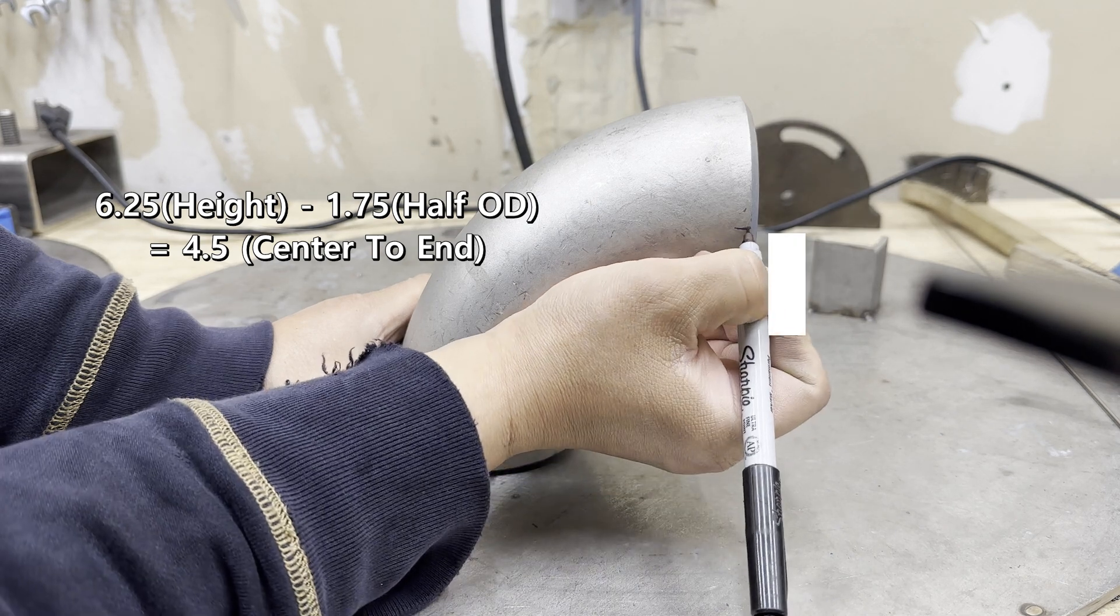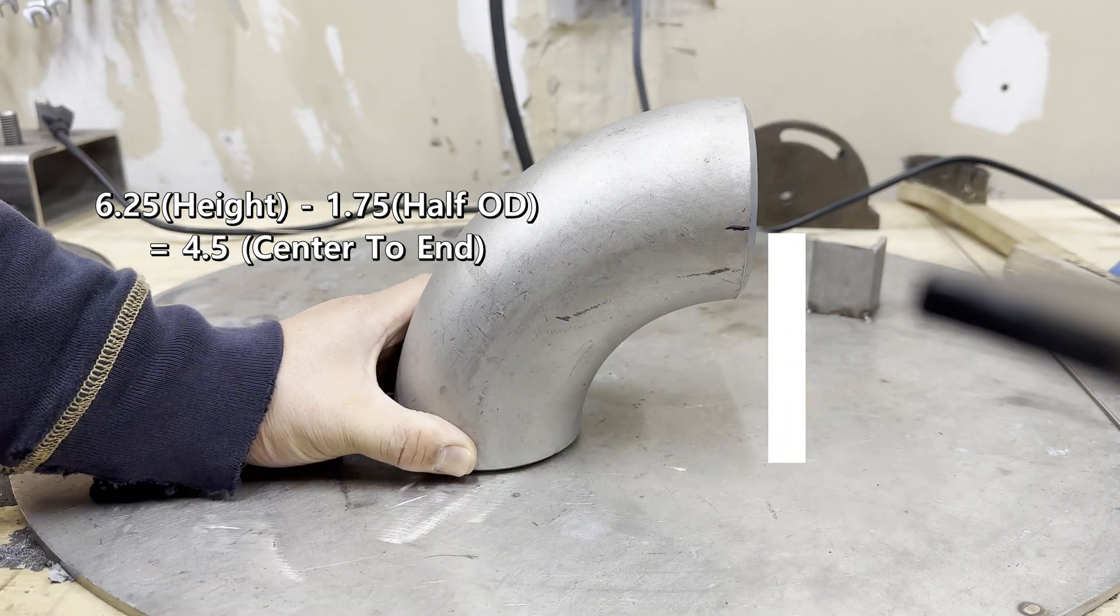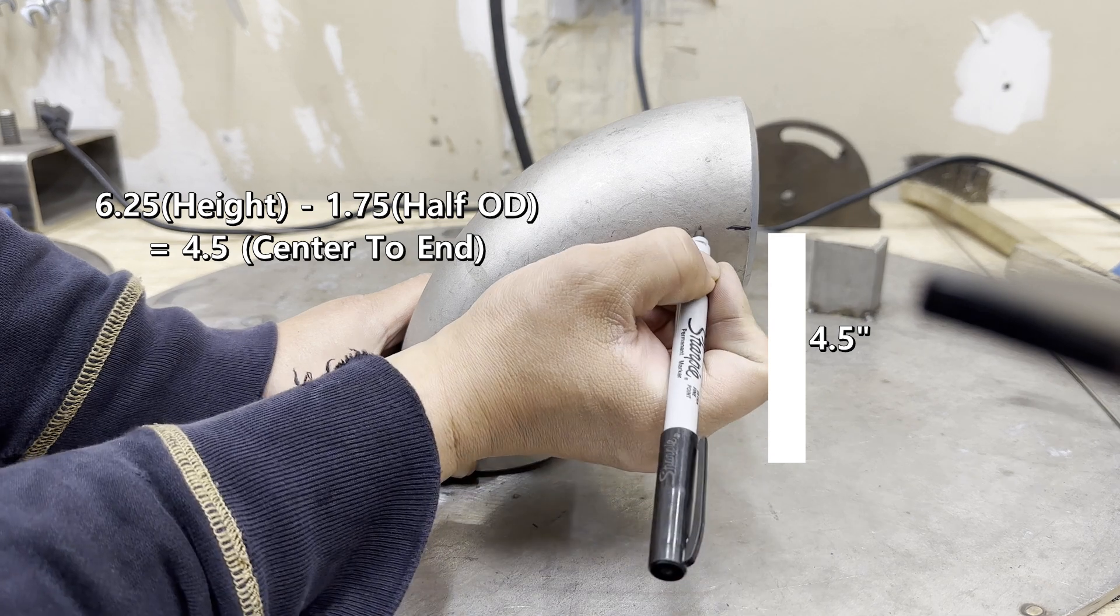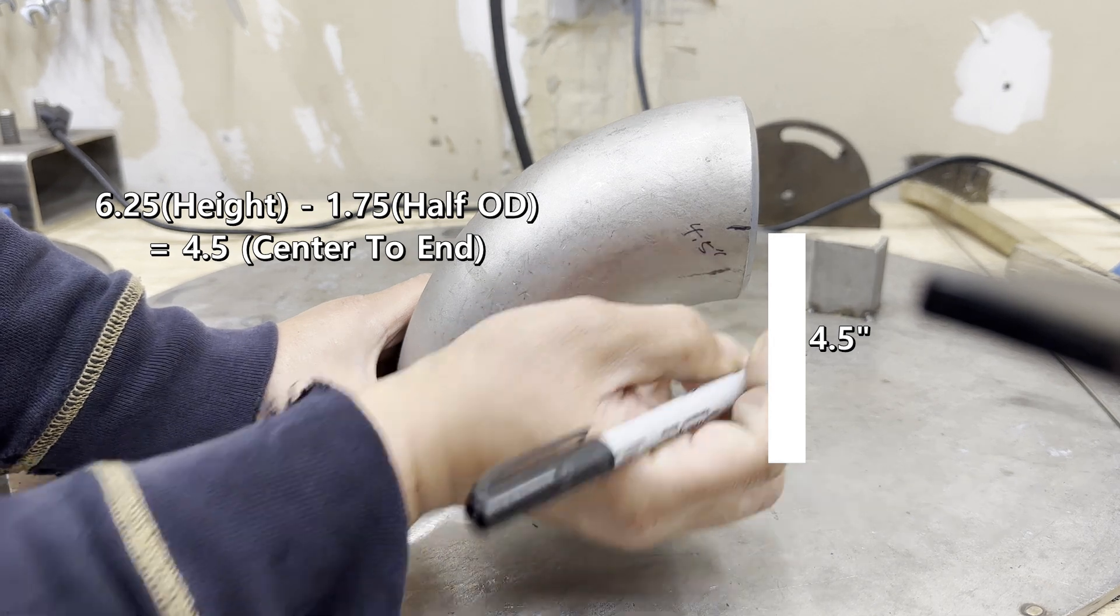Elbow height 6 and a quarter subtract half of OD 1 and 3 quarters is 4 and a half. We found out that 4 and a half inch is the center-to-end dimension for a 90 degree long radius elbow.